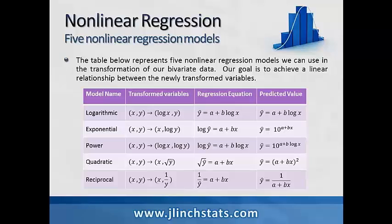The third type of transformation is where we convert our x, y values to log x versus log y values. Our regression equation becomes log(ŷ) = a + b·log(x), and we can solve for ŷ, our predicted value, which is equivalent to 10 raised to the power of a + b·log(x).